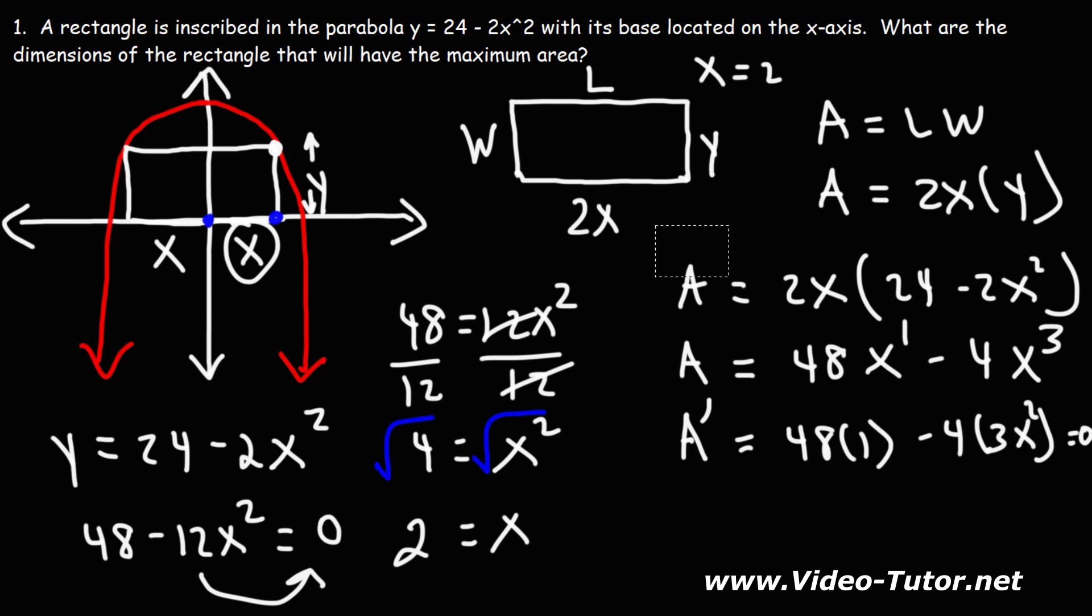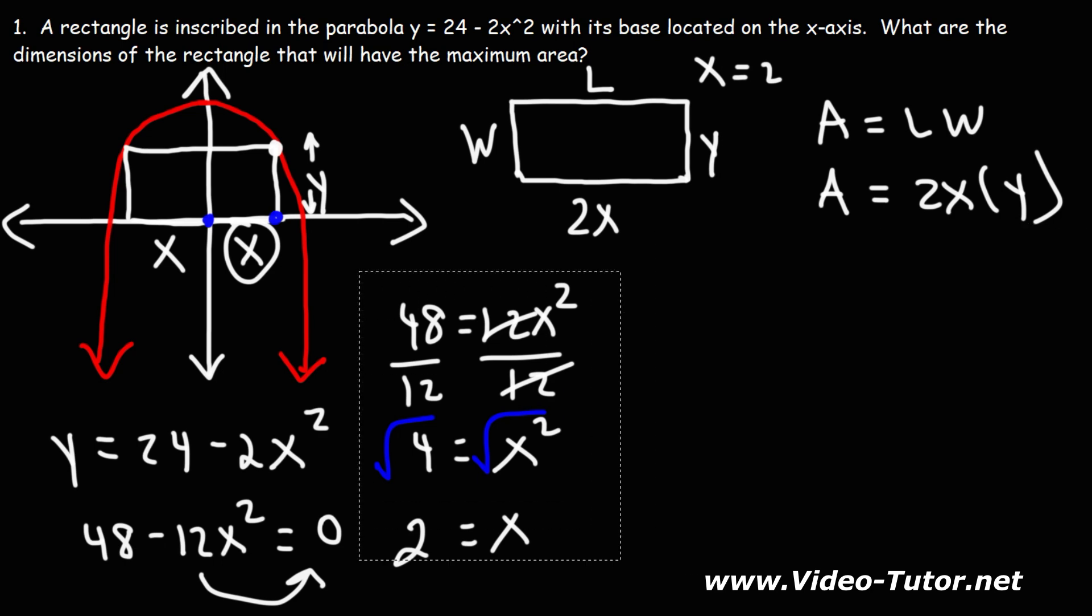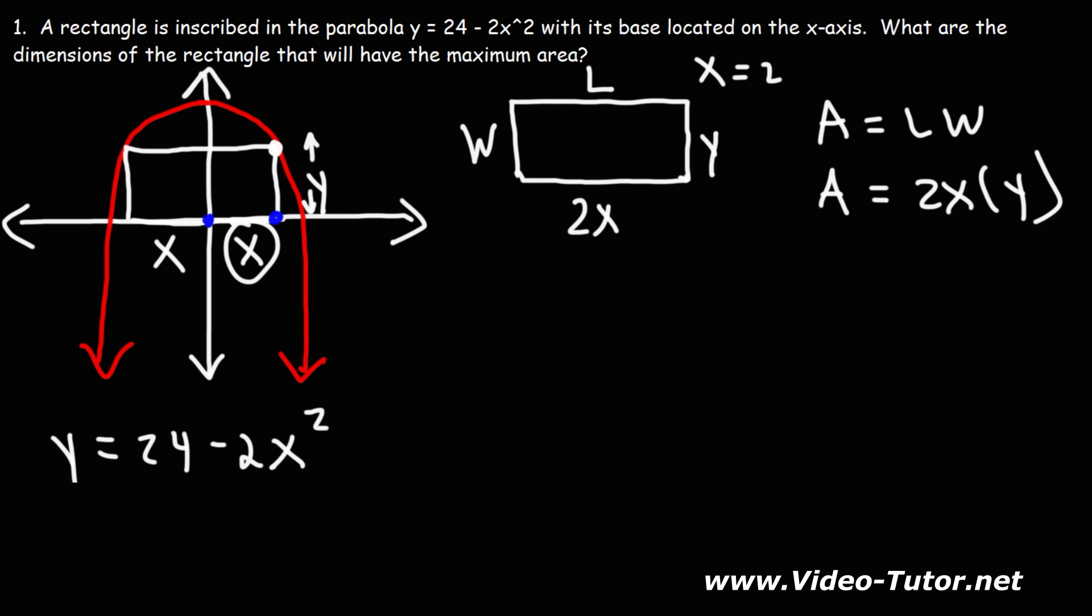Now that we know the value of x, we can get rid of this. And this. And this as well. We know that at x equals 2, the area function will be at its maximum value. Now we need to determine y. So we're going to use this function. Let's plug in 2 into x. So this is going to be 24 minus 2 times 2 squared is 4. And 2 times 4 is 8. 24 minus 8 is 16. So the dimensions, well, we don't quite have it yet. But right now, we know that x is 2 and y is 16.